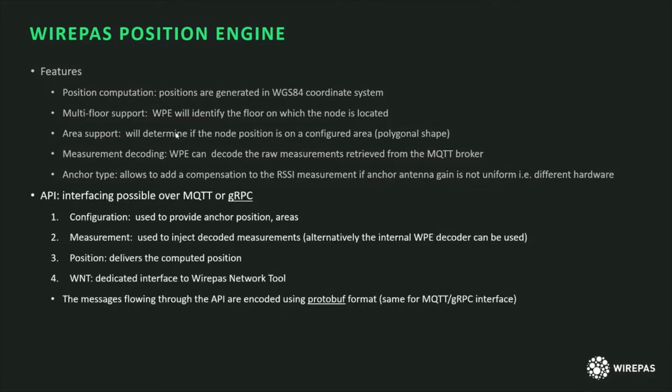Interfacing to the WPE can be done through either MQTT or gRPC. gRPC is the internal bus of the WPE microservices, and this API provides the ability to configure the WPE by providing anchor positions and areas, to inject measurements, and finally to observe the computed positions. There is a dedicated API for interfacing the WNT, and that is currently internal between the WPE and WNT. As with many of our backend services and gateways, the WPE uses Protocol Buffers to encode messages, and we provide a file describing this format.